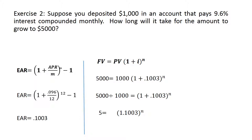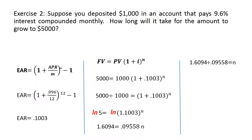Since n is still an exponent, I use the natural log to lower it. Press LN of 5 to get 1.6094, then press LN of 1.1003 to get 0.09558. Now I can divide: 1.6094 divided by 0.09558, and I get 16.838 — which is the number of years. I can round it to 17 years.